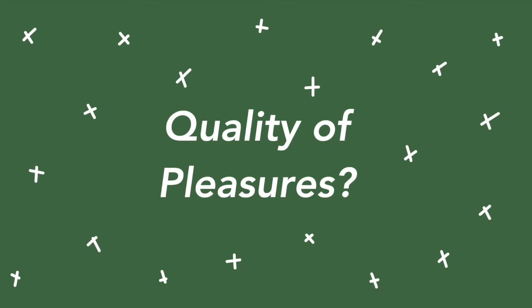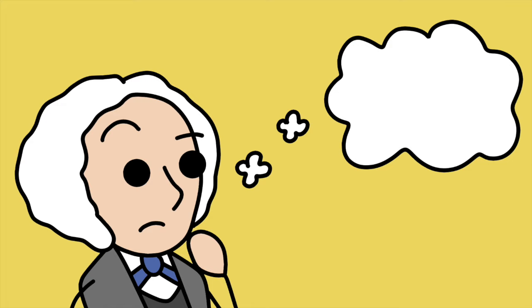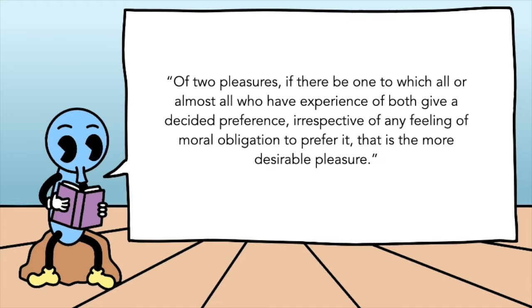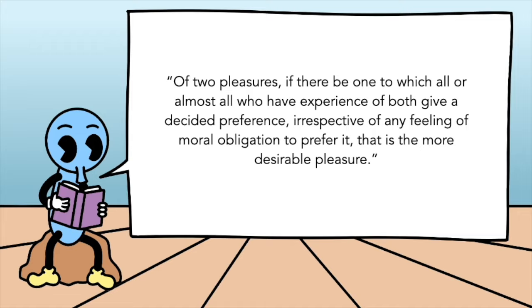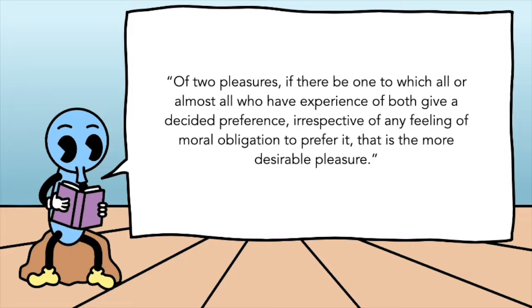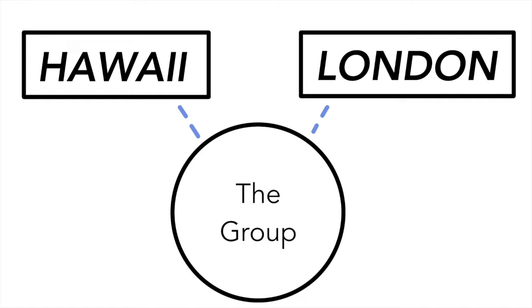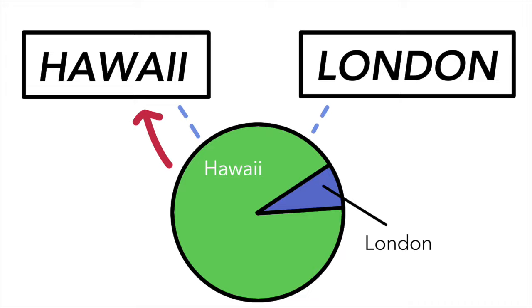The next issue of contention regards the quality of pleasures. So okay, John Stuart Mill, if good actions promote happiness and pleasure and reduce pain, what if you're deciding between two different pleasures and you can only choose one? How do we decide which pleasure we should pursue? Of two pleasures, if there be one to which all or almost all who have experience of both give a decided preference, irrespective of any feeling of moral obligation to prefer it, that is the more desirable pleasure. So let's say we're deciding between a trip to Hawaii or a trip to London. We take a group of people which have been to both and see which they prefer — which is obviously going to be Hawaii — and that would tell us what the higher quality pleasure is. But if there's no unanimous consensus, then we just consider what the majority prefers. It's almost democratic in a sense.